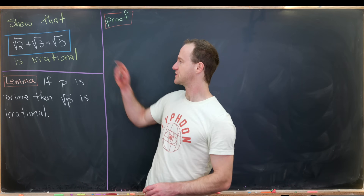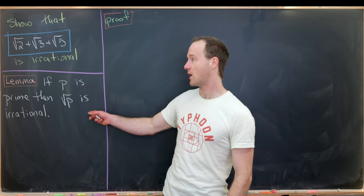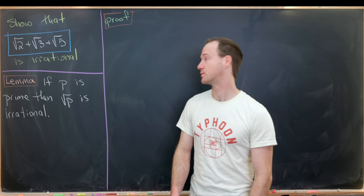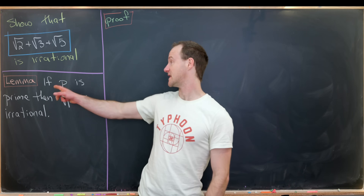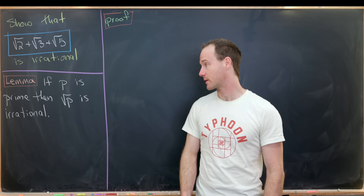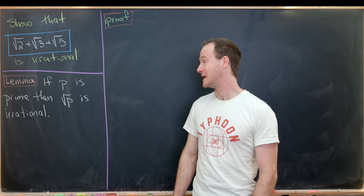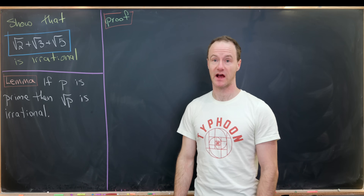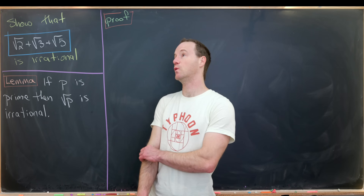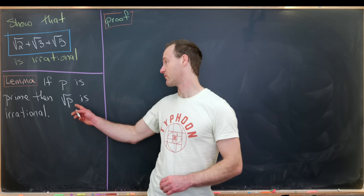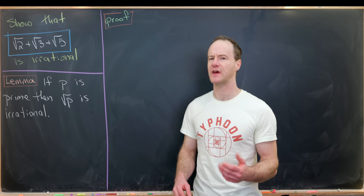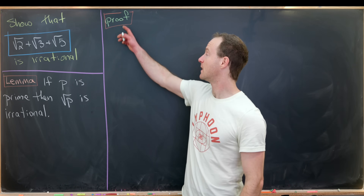In order to prove this, we'll use the following lemma, which we will also prove. That lemma says that if p is a prime number, then the square root of p is irrational. In fact, it's pretty easy to classify which numbers have rational and irrational square roots. We won't do that here, but I'll let you guys think about that.